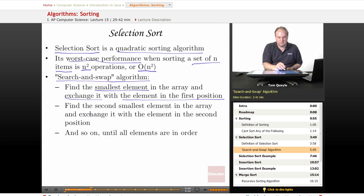And then we just repeat until we reach the end of the array. So find the second smallest element in the array, which would be the smallest element that we haven't already moved to the front of the array, and we exchange it with the element in the second position.